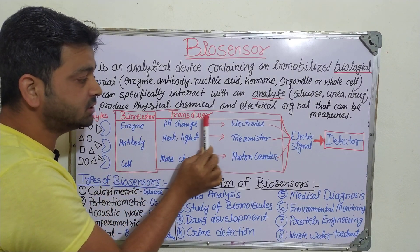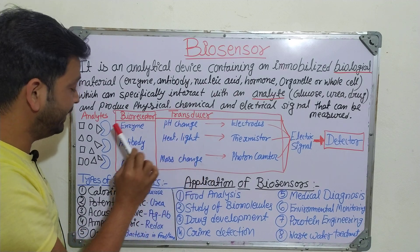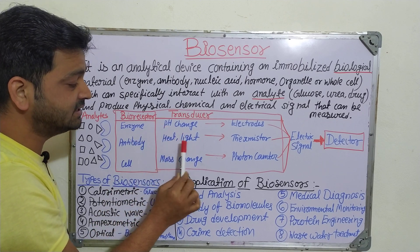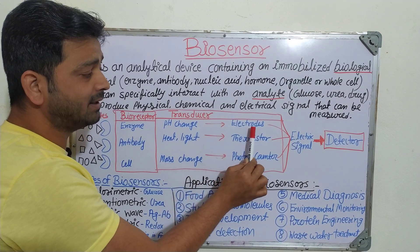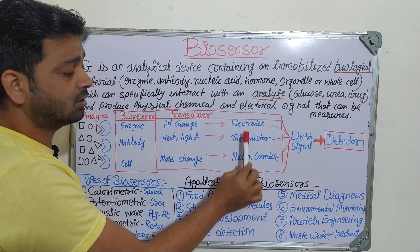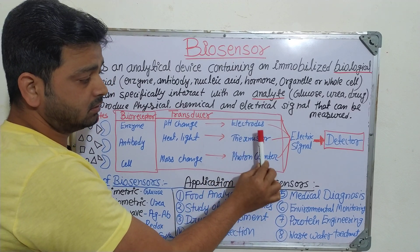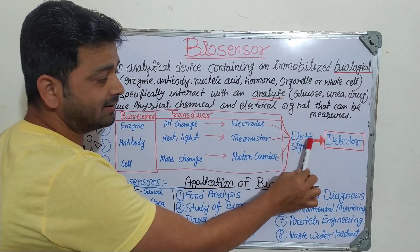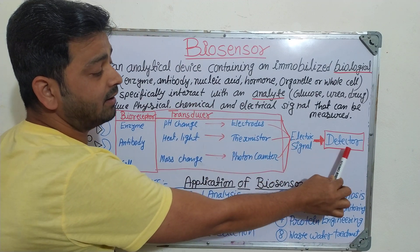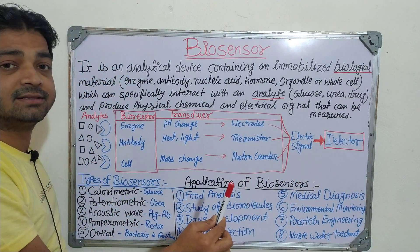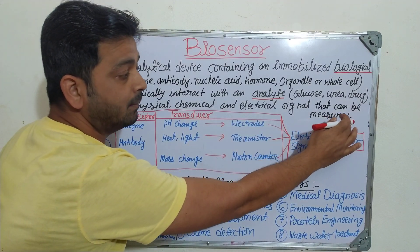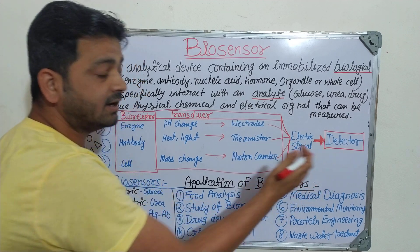When the binding or reaction occurs, there will be a transducer — another component — which detects changes such as pH change, heat, light, or mass change. This is detected by electrodes, thermistors, photon counters, or similar detectors that process the signal. Finally, the detector measures how much reaction or binding has taken place and generates an electrical, physical, or chemical signal accordingly.